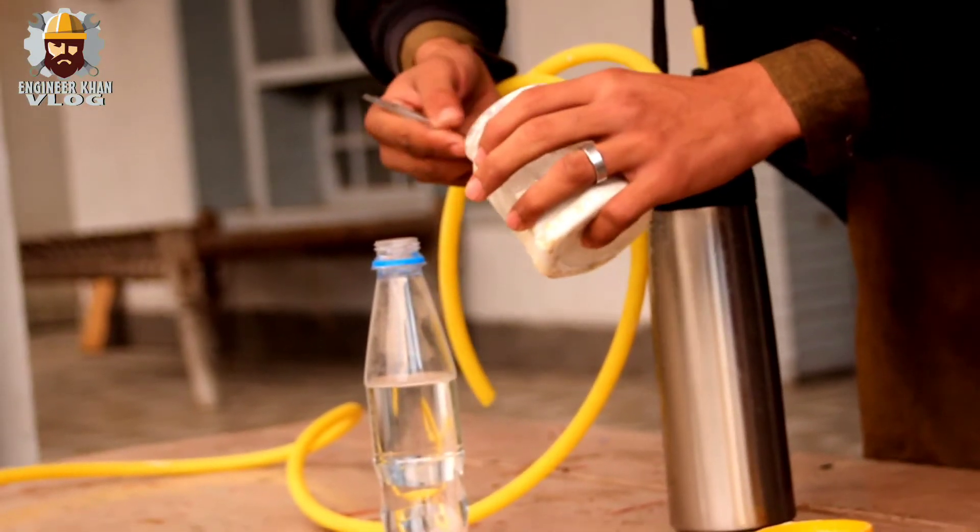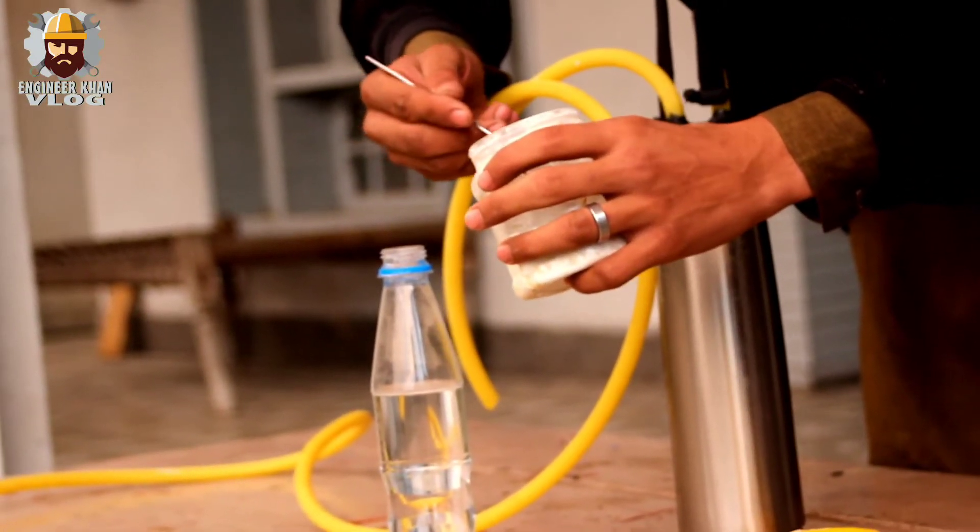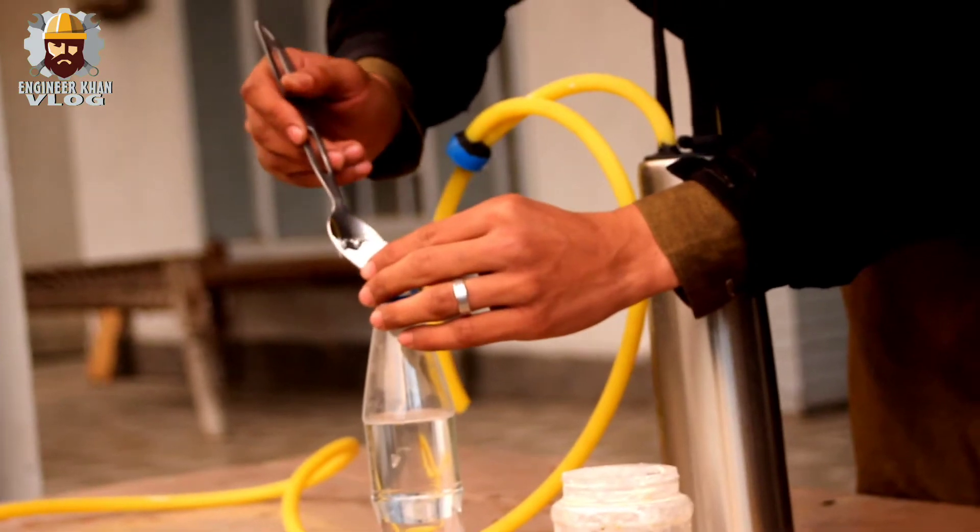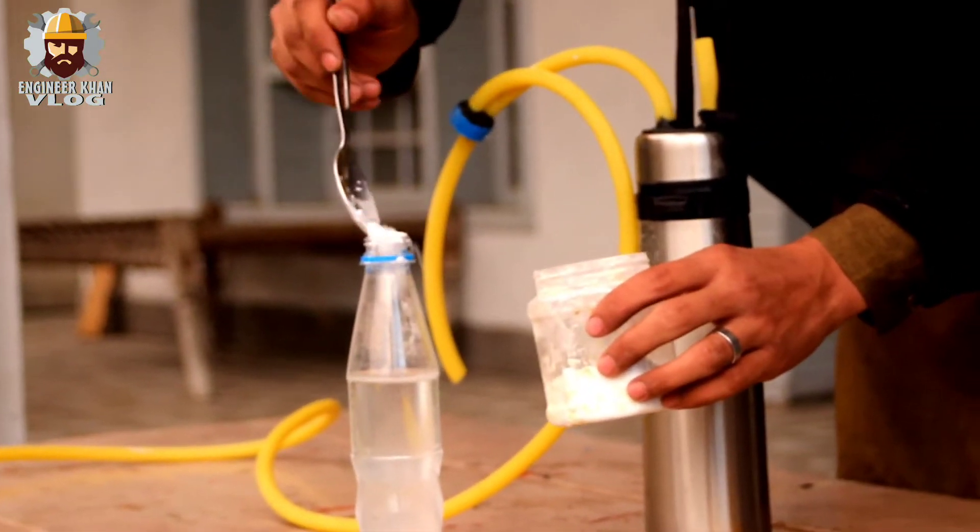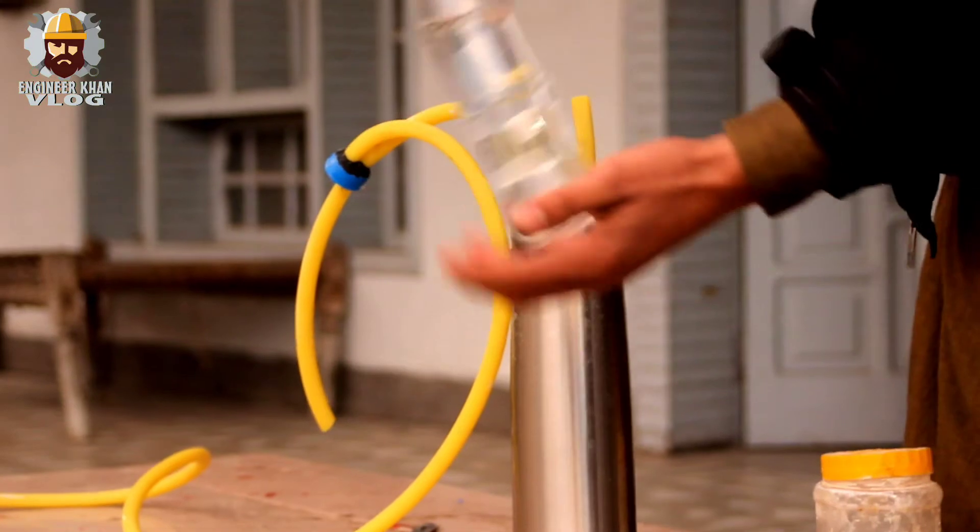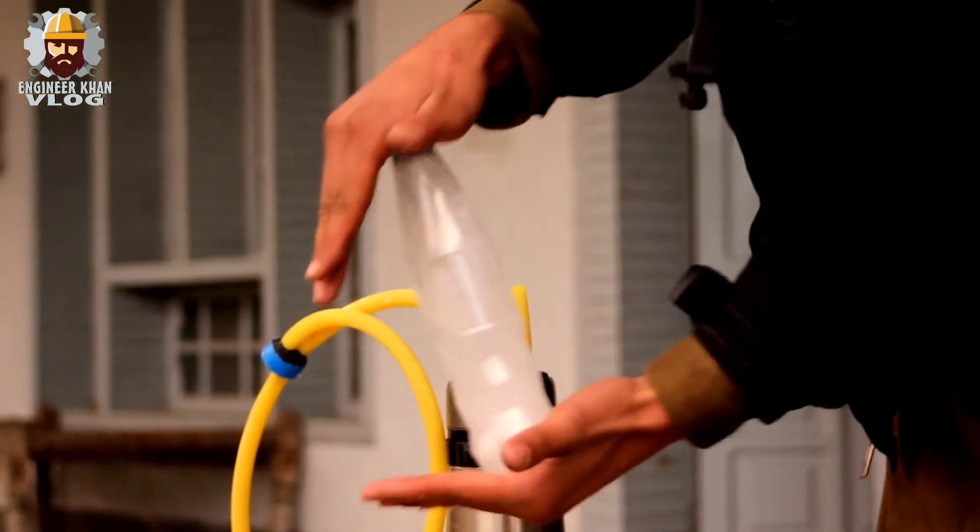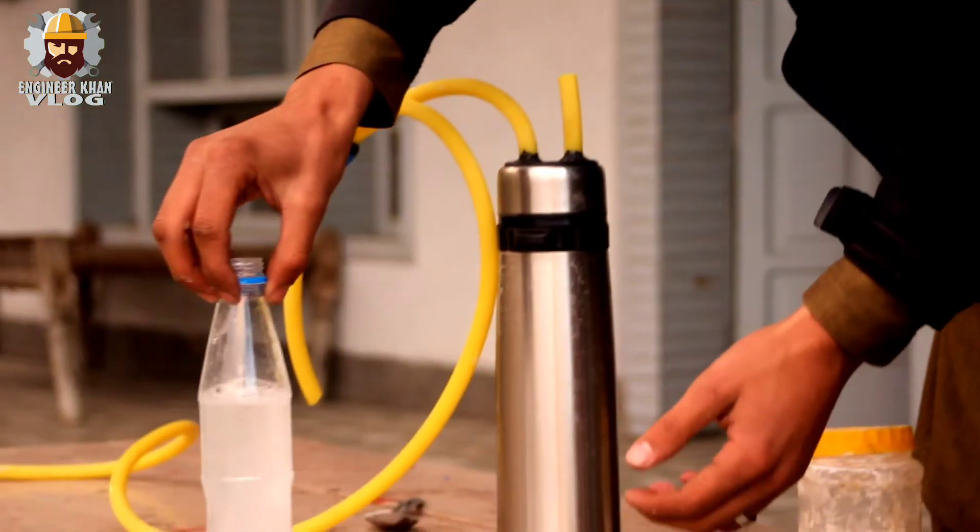For the second container, fill it with water up to a certain limit, then add 1 to 2 teaspoons of baking soda. Shake it well to mix the soda with the water, and then connect it with the piping system.